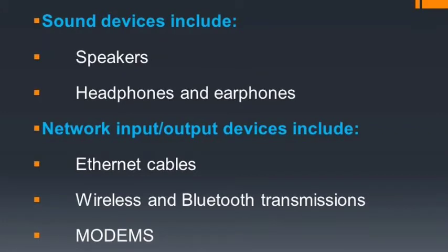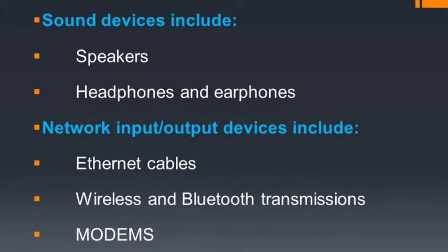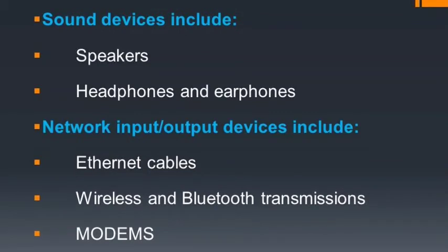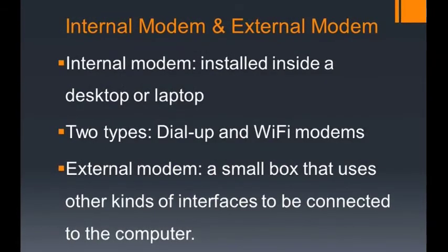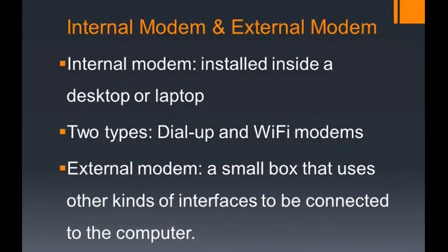Now coming to network input or output devices. Network devices include ethernet cables, wireless and Bluetooth transmissions and devices, and modems. The modem is an input and output device. When a computer talks to another computer or electronic device using a modem, it sends and receives digital information and data to and from the computer.